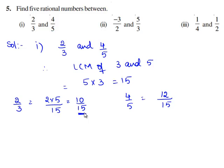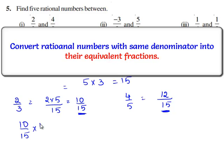Let us multiply 10/15 by 4 on both the numerator and denominator. We have 10 × 4 = 40 and 15 × 4 = 60.